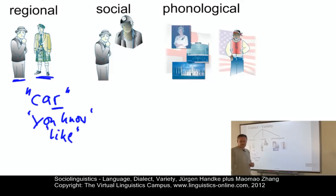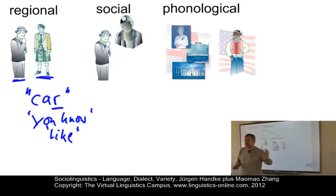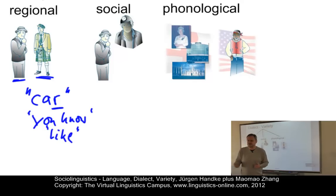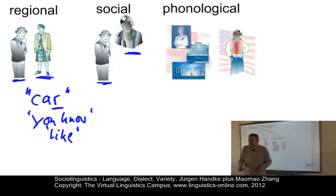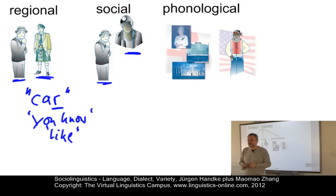Social dialect: when two people speak with one another, their language is always influenced by social factors — for example, the role of the speaker and listener and the relationship between them. Here we have two socially differently organized people — a mine worker and someone with an official function — and when they talk about a particular topic, their variety is influenced by these factors.